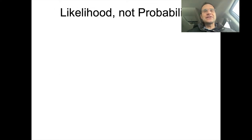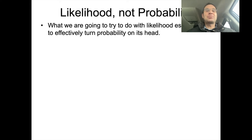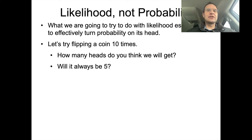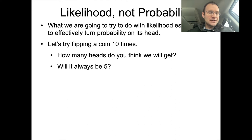To understand maximum likelihood estimation, we have to make a subtle distinction between what's called likelihood, which is not probability. In order to make likelihood estimations, we're going to have to turn probability on its head — which we're kind of already doing with the conditional probability and Bayesian analysis we've started. I'll try to walk you through this the way the paper does, which uses a nice, pretty simple example.